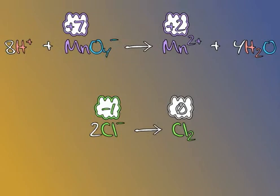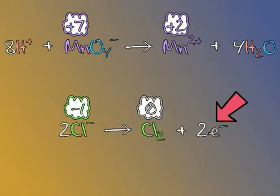The atoms in each half reaction are now balanced. Now we will have to balance the charges in each half reaction. The oxidation half reaction releases 2 electrons, one for each chloride ion that was oxidized.